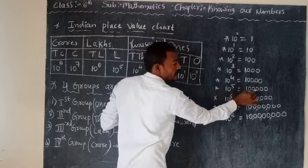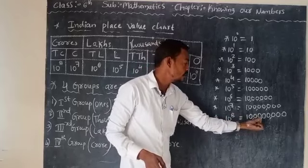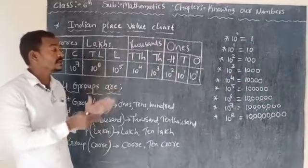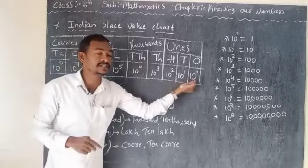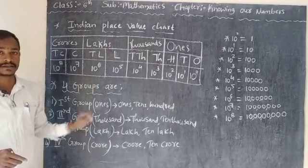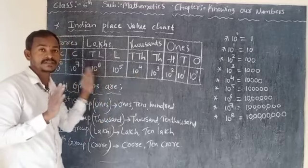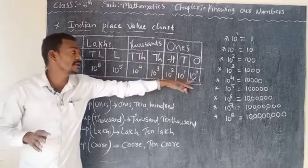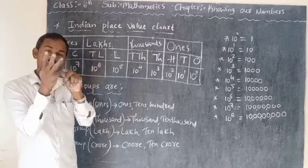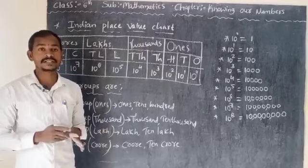10 raise to 5 means in front of 1 there are 5 zeros. 10 raise to 8 means in front of 1 there are 8 zeros: 1, 2, 3, 4, 5, 6, 7, 8. So the Indian place value chart starts from 10 raise to 0 and ends at 10 raise to 8, and the total places are 9.